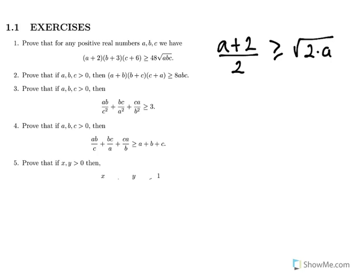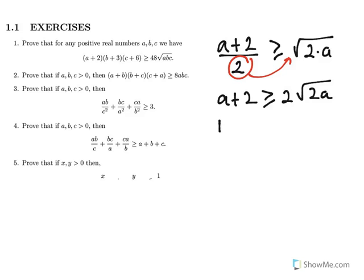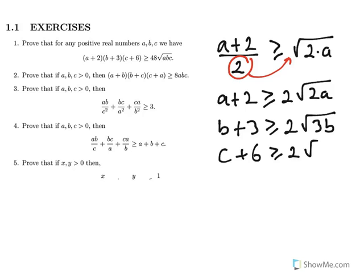If we transpose the 2 to the other side, we get A+2 ≥ 2√(2A). Similarly, B+3 ≥ 2√(3B), and C+6 ≥ 2√(6C).